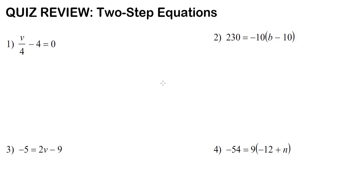Let's go ahead and do this quiz review for solving two-step equations. Number one: v over 4 minus 4 equals 0.